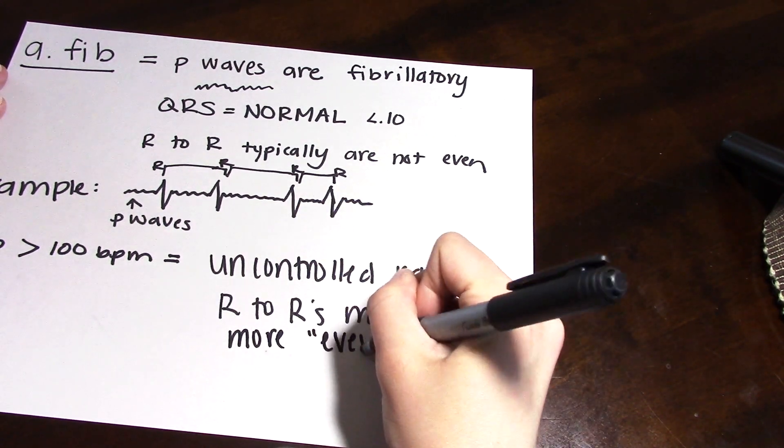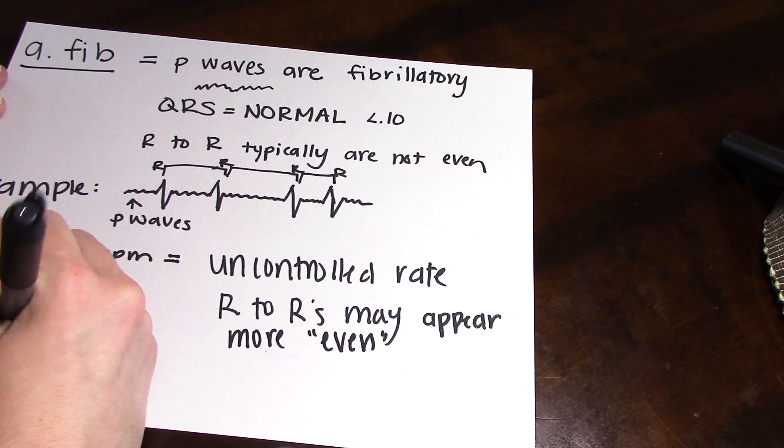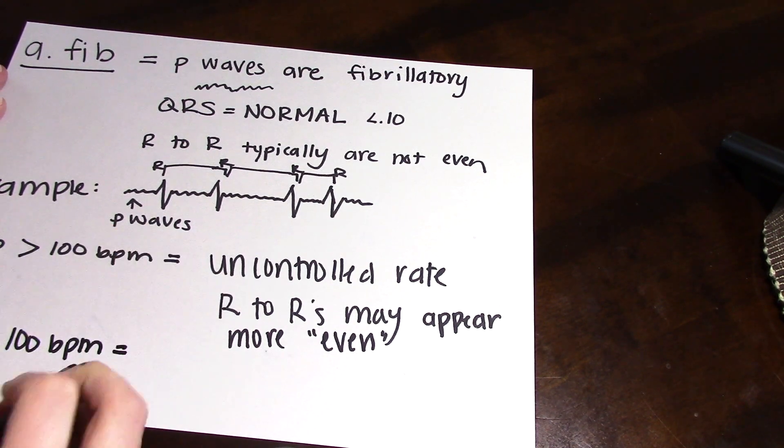So when you have a rate above 100 beats per minute, then typically your R to R's are going to look more even because they are closer spaced together.